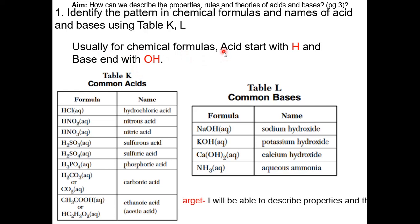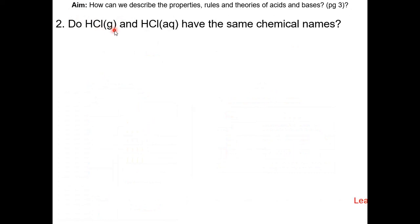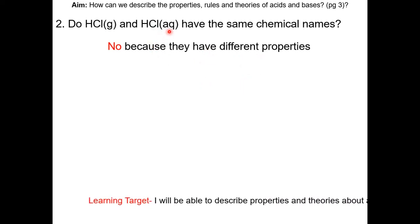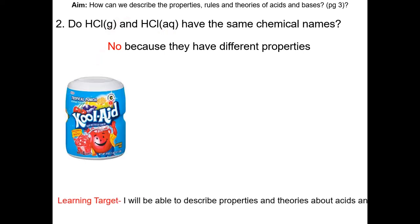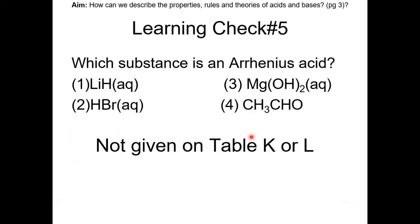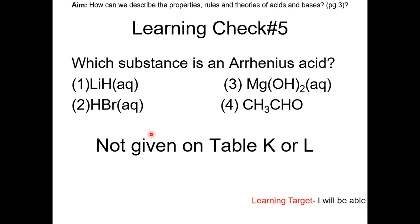Usually, for chemical formulas, acids start with H while bases end with OH. Do HCl gas and HCl(aq) have the same chemical names? The answer is no, because they have different properties. HCl(aq) is considered an acid, but HCl gas is not. An analogy: the powder form of Kool-Aid has different properties than the solution. Learning check number 5: which substance is an Arrhenius acid? This acid is not on the reference table, but we can still figure it out — the chemical formula of acids typically have H in front, so the answer is choice 2, HBr.